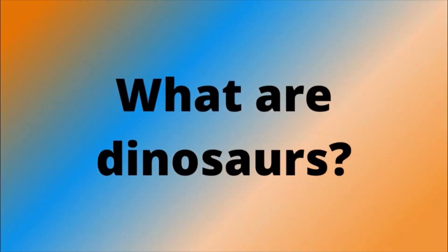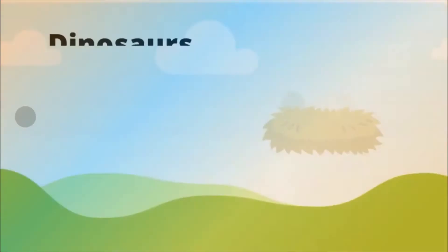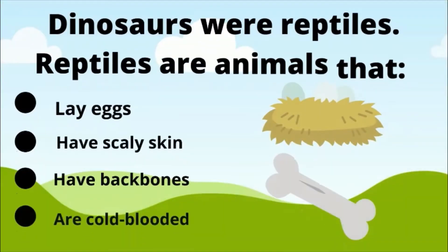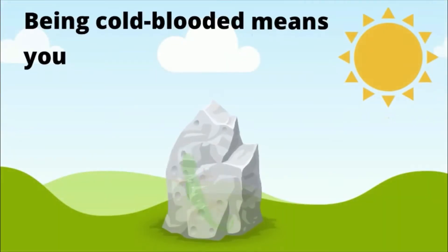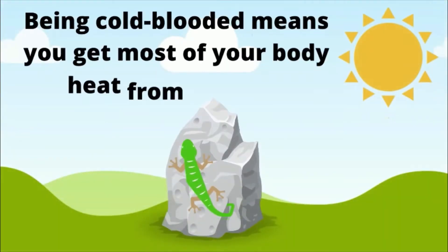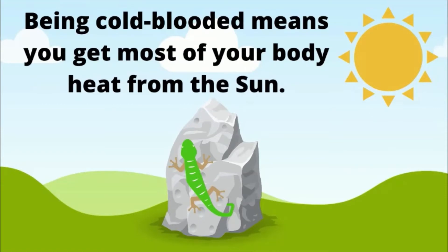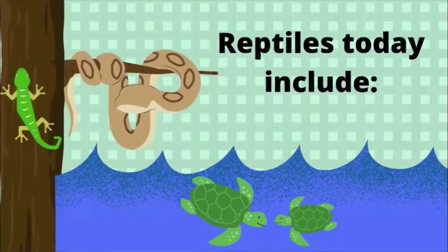What are dinosaurs? Dinosaurs were reptiles. Reptiles are animals that lay eggs, have scaly skin, have backbones, and are cold-blooded. Being cold-blooded means you get most of your body heat from the sun. Reptiles today include lizards, snakes, and turtles.